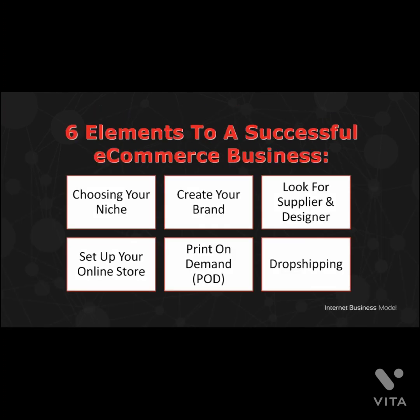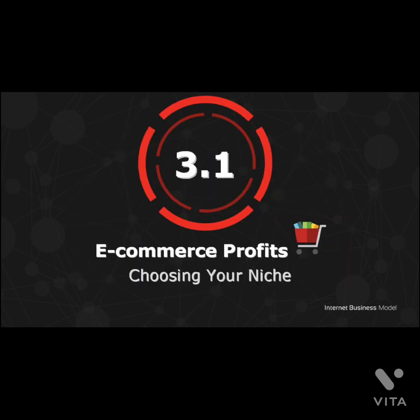There are six elements in your e-commerce model: one, choosing your niche; two, create your own brand; three, look for suppliers and designers; four, set up your online store; five, print-on-demand (POD); six, drop shipping. Next, you need to choose a niche for your online business. A product niche helps to establish a solid ground for your business — you can't just change from one business to another and expect your trustworthy buyers to keep up. Start selling something which you have at least a slight interest in, so you have the motivation to get through the days of low sales and technical issues.